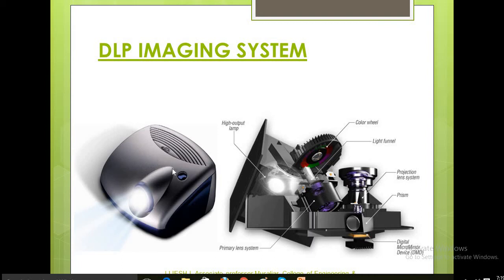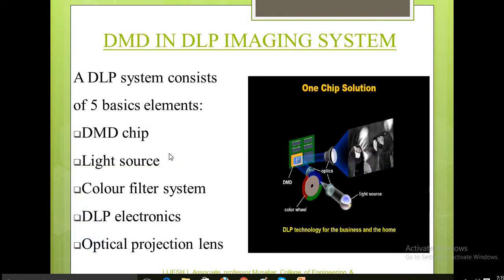This is one of the important applications of DMD with DLP - digital light processing micro projectors, which are handy and compact. The DLP consists of a DMD chip, light source, color filter system, DLP electronics, optical projection lens, etc.